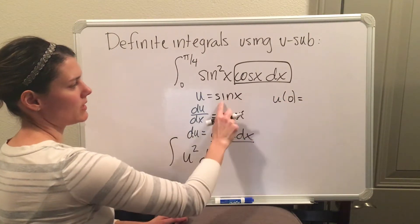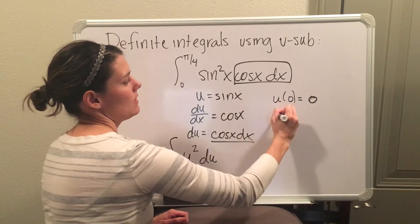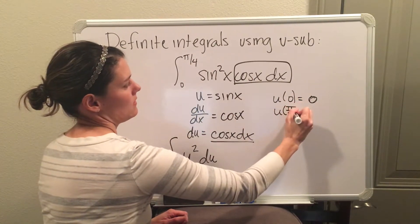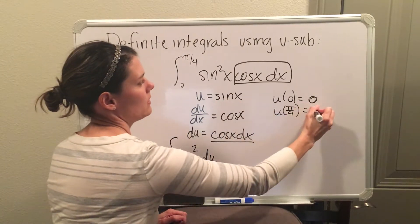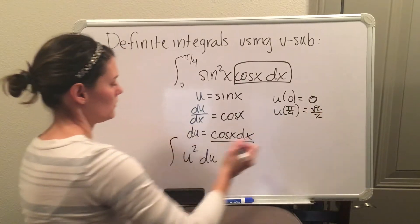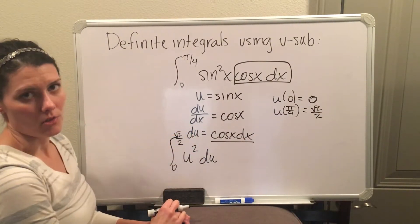So if I plug 0 into sine, I still get 0. And then you're going to plug your b into your u equation. So sine of pi over 4 is square root of 2 over 2. So 0 to square root of 2 over 2 is your new a and b.